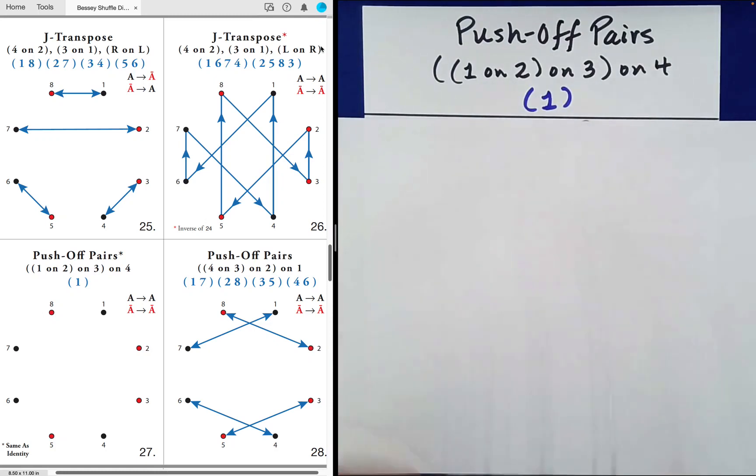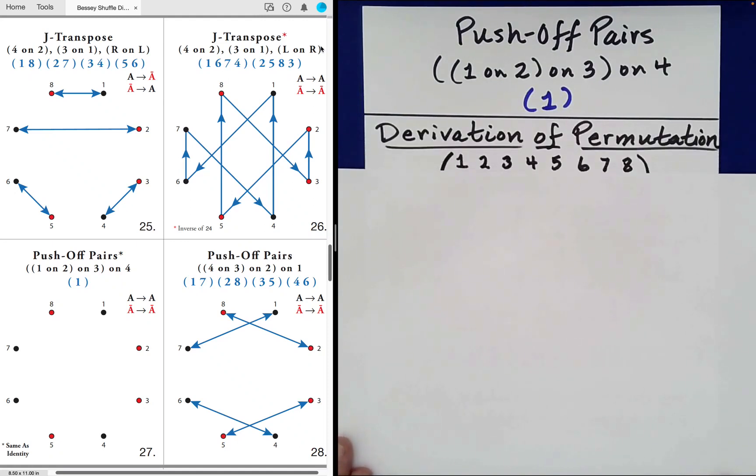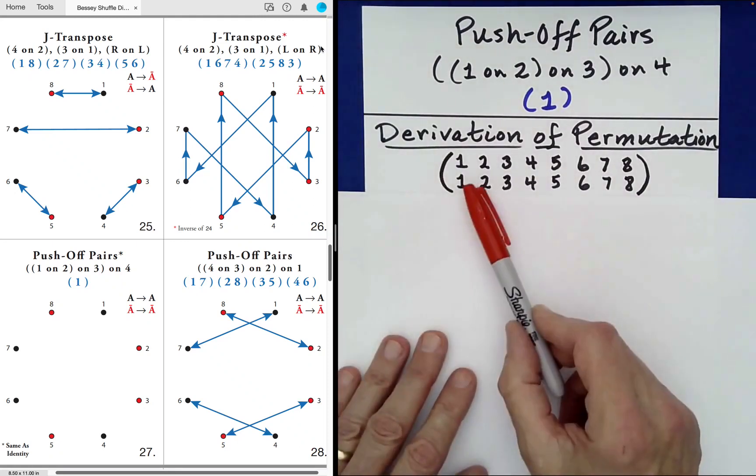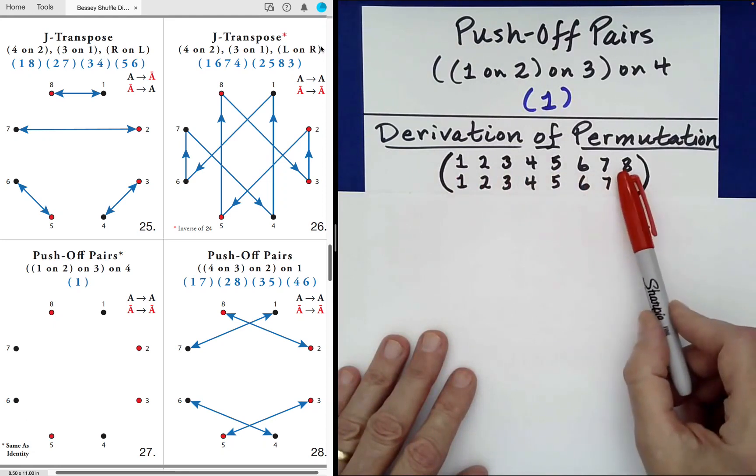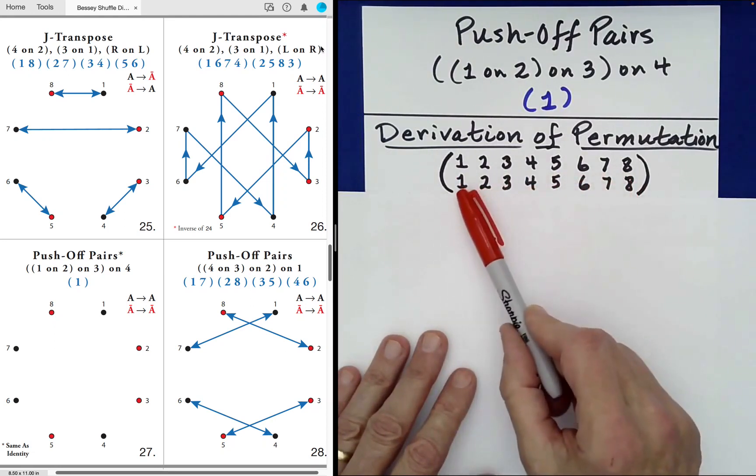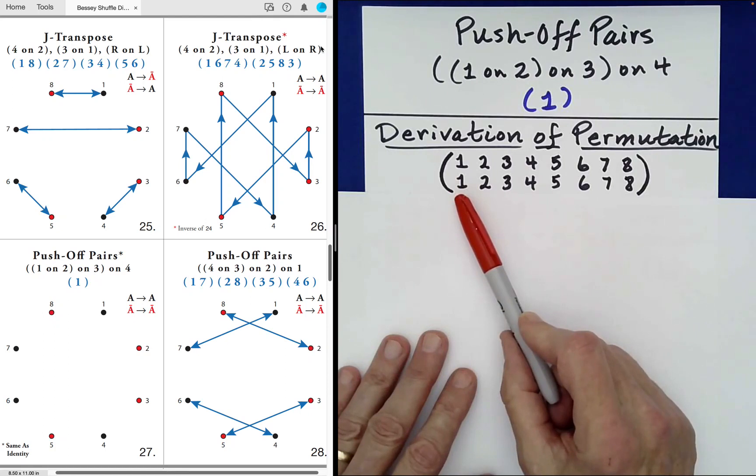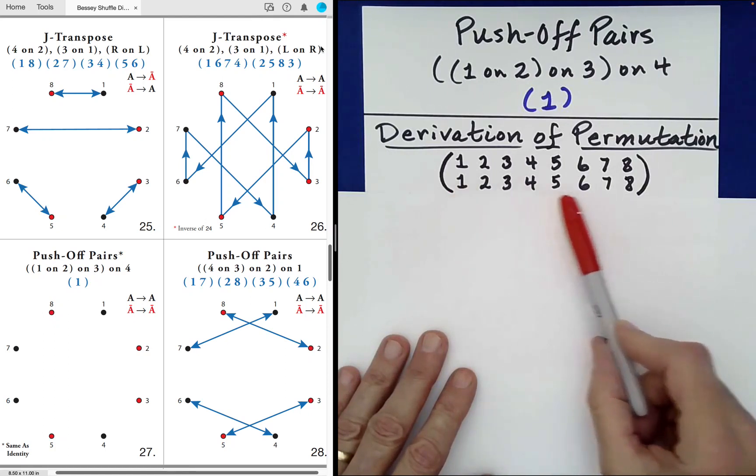So writing this permutation in Cauchy's two-line notation, we obtain the following. The original order was one through eight, and after the shuffle had been completed, we again finish with an order of one through eight.